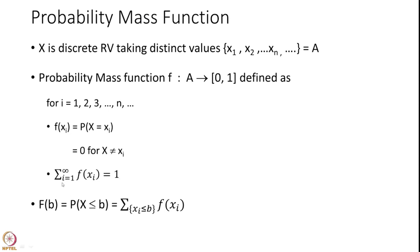The summation of all values of the probability mass function equals 1. The cumulative distribution function CDF of random variable X is the probability that X is less than or equal to b, which in terms of the probability mass function can be written as the summation over all Xi's which are less than b of f of Xi.